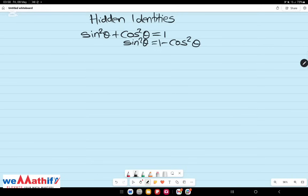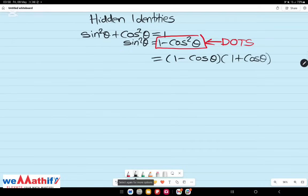However, this identity can be taken further, because if you look at the right-hand side of this identity, this is actually a difference of two squares. And that means we can factorize the right-hand side to get 1 minus cos theta, 1 plus cos theta, meaning sine squared theta can be written as 1 minus cos theta multiplied by 1 plus cos theta.